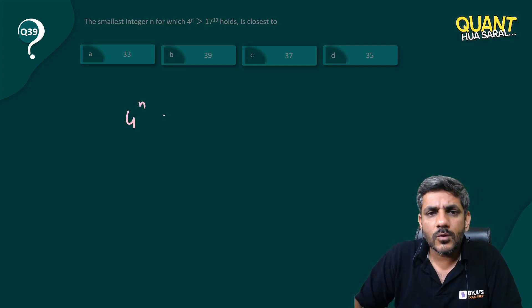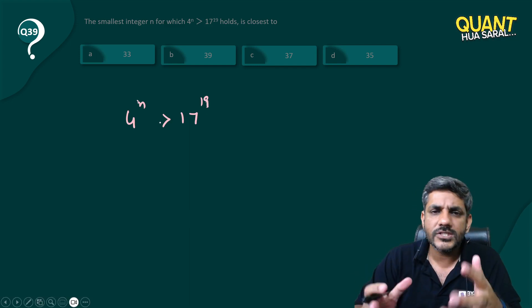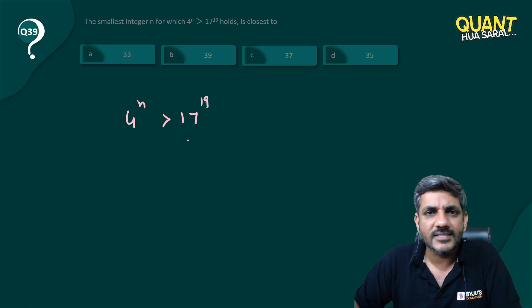But what comes to my mind when I look at this question: 4^n, 17^19, is there any power of 4 which is very close to 17? We all know it is 16.